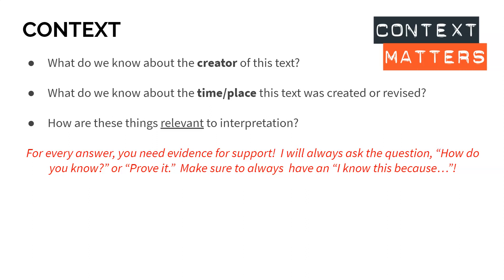First, context — really crucial. Before we even dive into the text, we need to think about what we already know about the creator of the text, although sometimes we can completely separate the creator from what is created. Having that contextual information about who they are, what they've done, what they believe, will really make our analysis much smoother and more fully developed. We also have to consider what we know about the time or place the text was created or revised. Something created in 2020 comes out of very different circumstances than something created in 1820. We have to keep that context in mind because context affects the ideas within the piece.